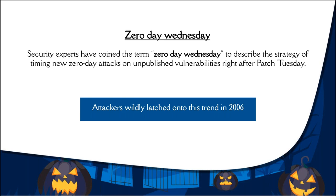There is also a cunning strategy attackers use to target Microsoft applications and operating systems. Windows users should be aware of the monthly patch release schedule — also called Patch Tuesday — which falls on the second Tuesday of every month. Cybercriminals time new zero-day attacks right after Patch Tuesday, just after Microsoft publishes its latest patches. This brings an element of surprise since new attacks are carried out on unpublished vulnerabilities while everyone is busy patching disclosed ones. By the time Microsoft releases a patch for the new flaw, the damage would already be done.